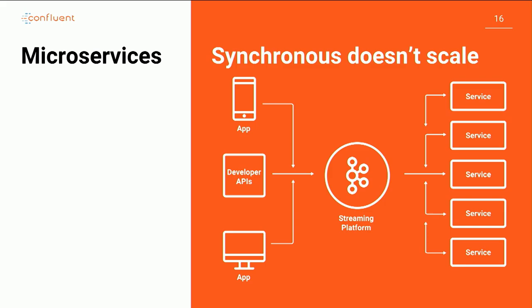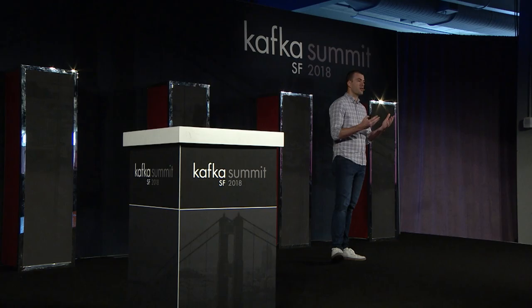People have only been talking about this for a matter of years. But already, if you look at a poll Pivotal did a few months back, they found that Kafka was half as popular as REST as a layer for implementing microservices. That's a huge change in how people are going about this — a huge rise of events in service design.